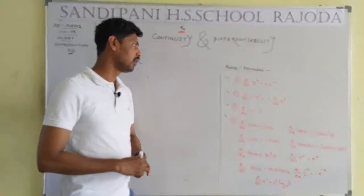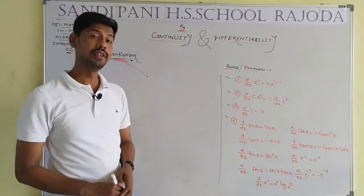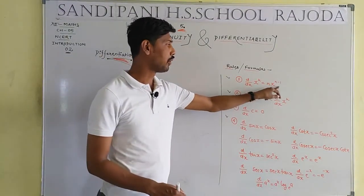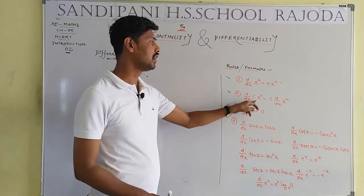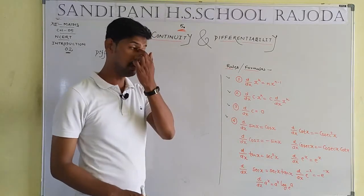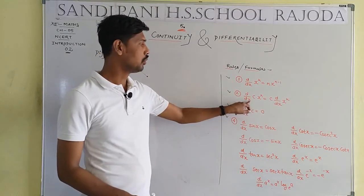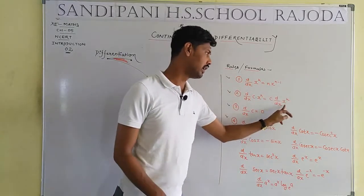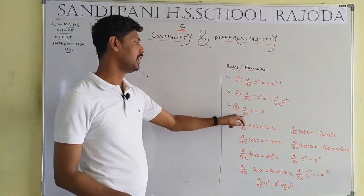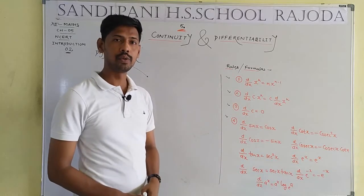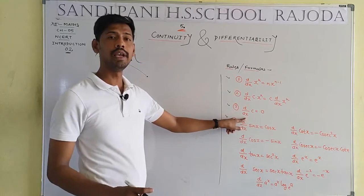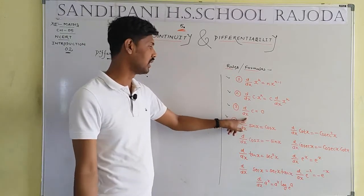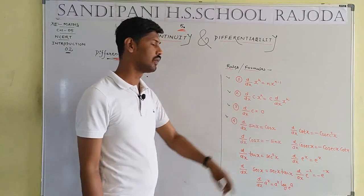Rule number 1: d/dx of x to the power n — that means any power, positive, negative, or zero, including roots expressed as powers. Rule number 2: d/dx of constant into variable — the constant comes out. Rule number 3: d/dx of a constant is equal to zero, since apart from x everything is constant, so differentiation equals zero.